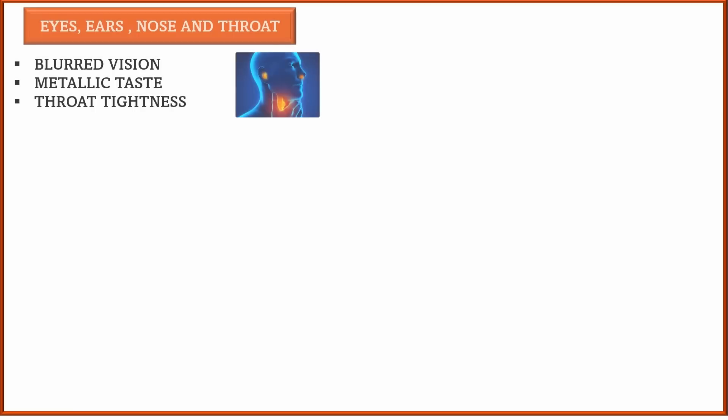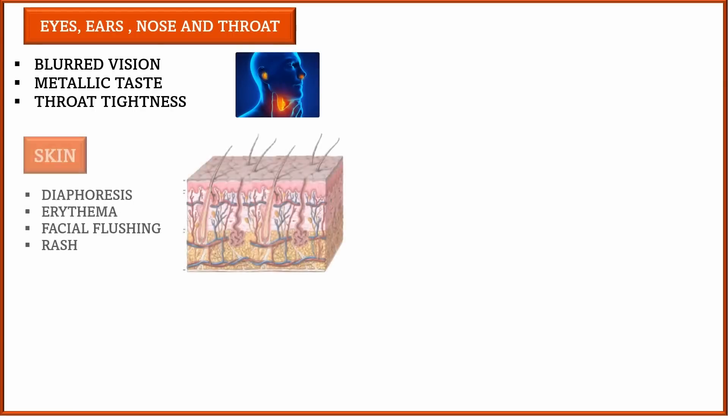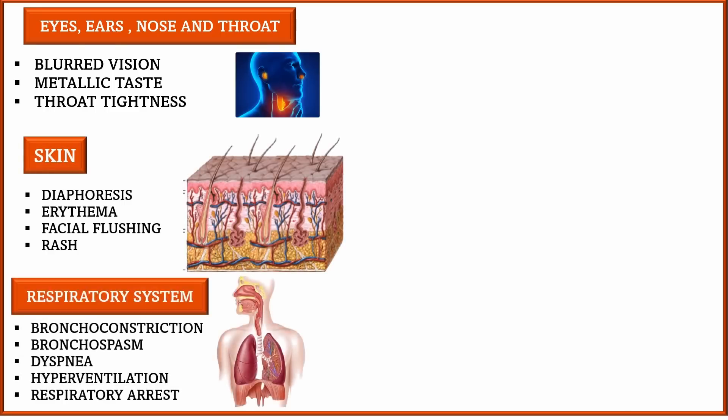Related to the ENT, blurred vision, metallic taste, and sore throat tightness are commonly seen. In the integumentary system, diaphoresis, erythema, facial flushing, and rash may occur.